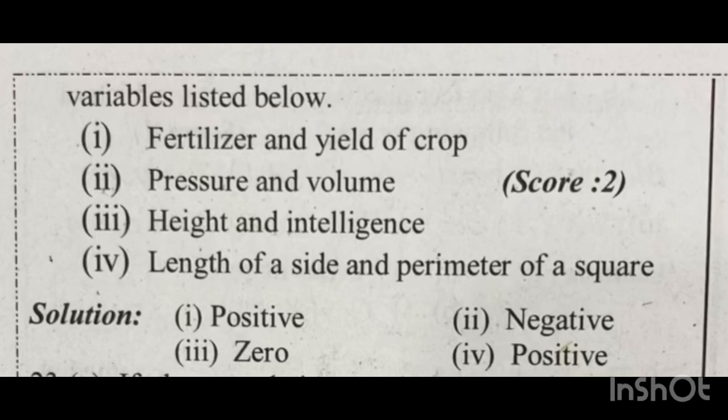First: fertilizer and yield of crop. If we use fertilizers in a good way and increase that value, then the yield of crop will increase. Fertilizer level increases, yield of crop increases. That is positive correlation.